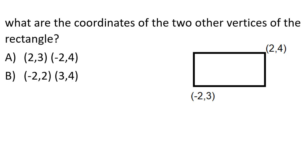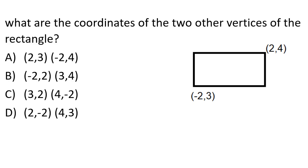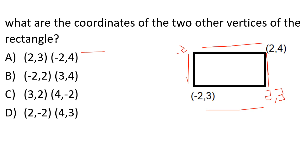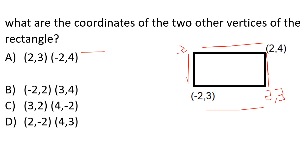What is the coordinate of the two vertices of the rectangle? We have the coordinates of the rectangle. If we have the direction of the second corner, then x becomes 2, y is 1 and x will be 1, y is 3. So the coordinates are (2,3) and (1,3).